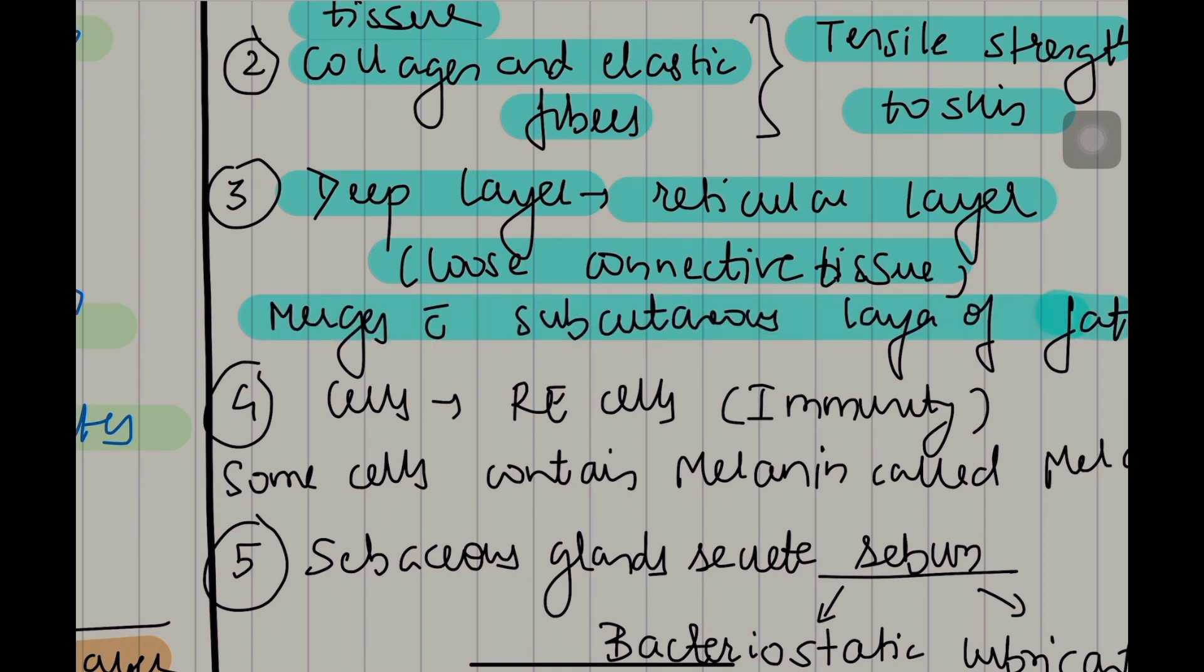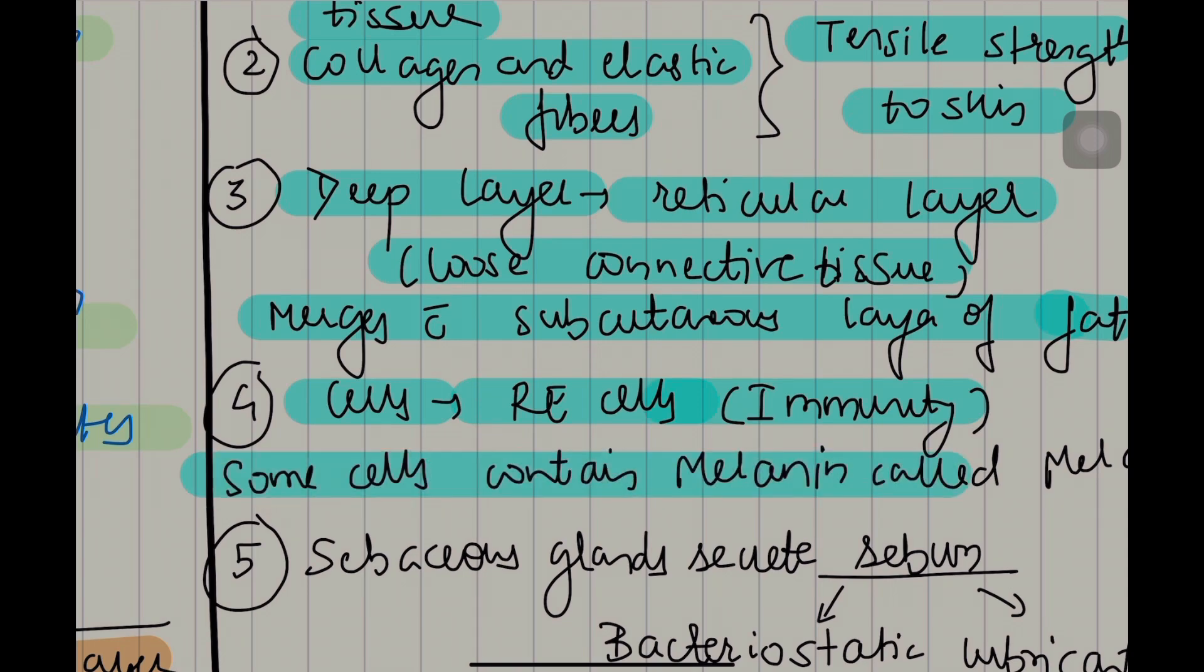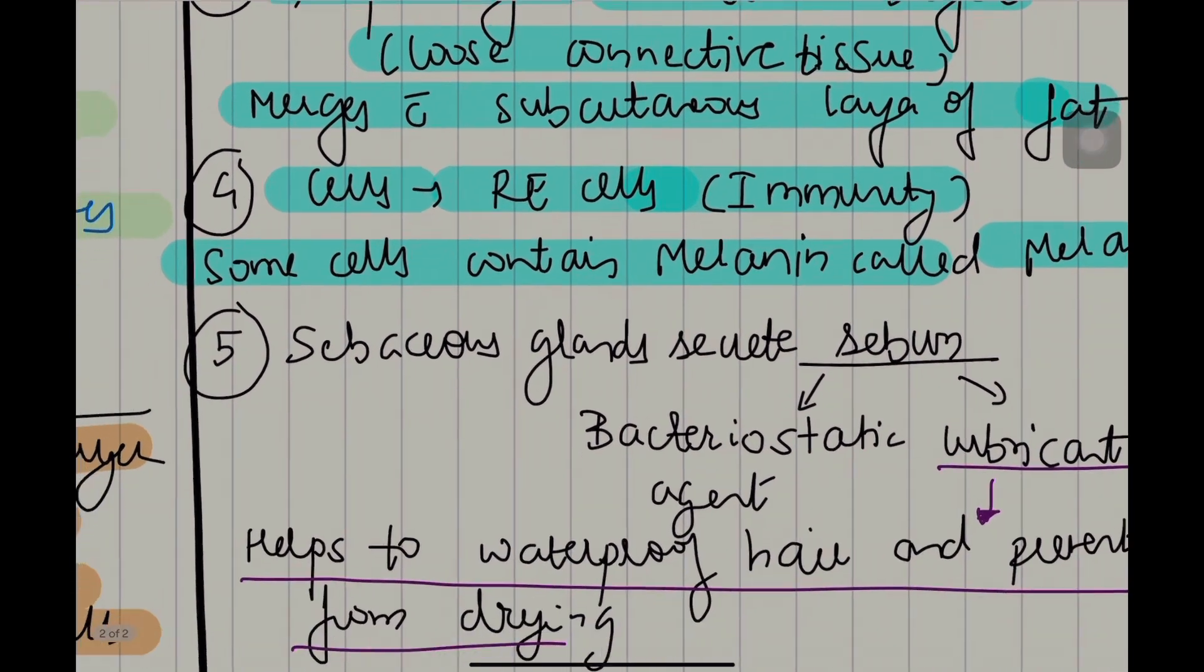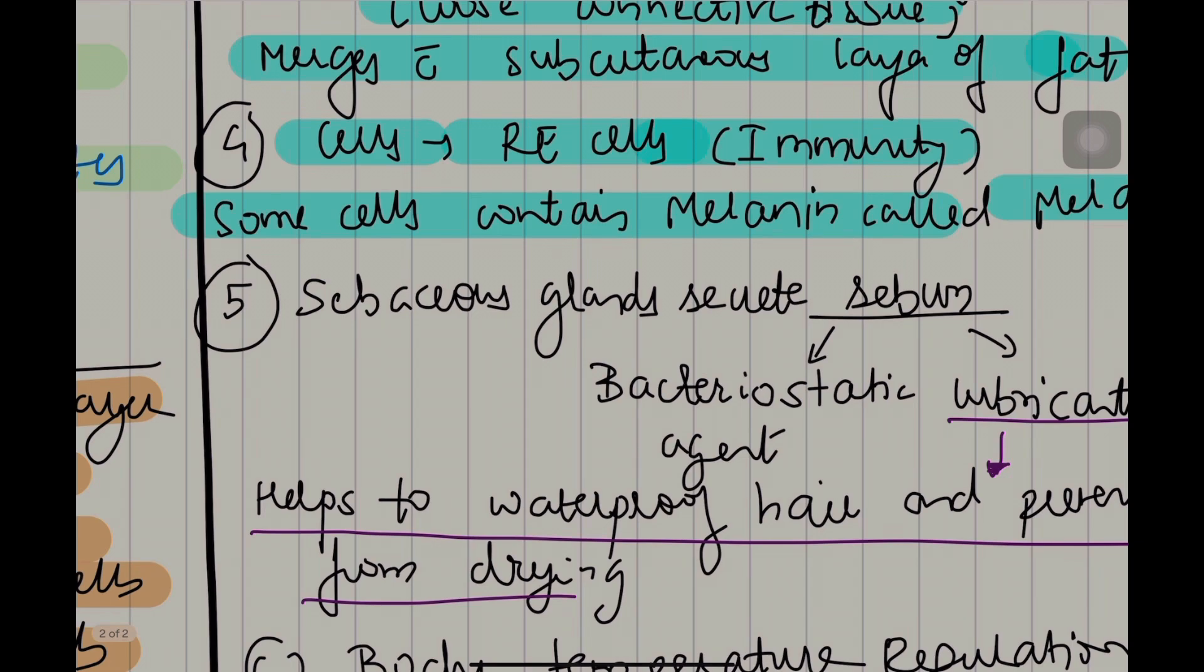The cells in the dermis are the RE cells. They are important for immunity. Some cells contain melanin and they are called melanophores. The dermis also contains sebaceous glands which secrete sebum.